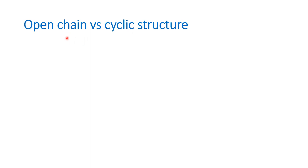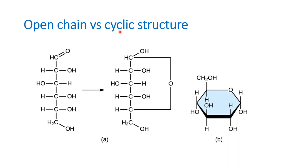In the previous video, we saw only the open chain structure of carbohydrates. Now in this video, we are going to see that carbohydrates not only have an open chain but also have a cyclic structure. We want to know how glucose, for instance, is able to exist in a cyclic form — represented as a big ring with an oxygen in between, a six-membered ring.